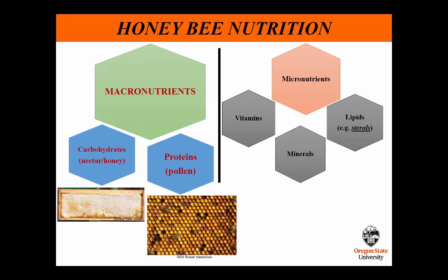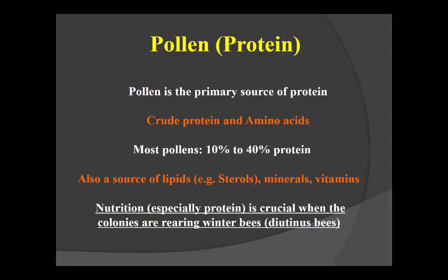Pollen is also a source of lipids, especially sterols. Lipids are broadly classified into fats, phospholipids, steroids or sterols, and waxes. Like we all need cholesterol — an important sterol for humans — all insects need sterols as well. Unfortunately, insects can't make their own sterols; they must come from the diet. Sterols are components of cell membranes and are precursors of molting hormones. All insects, including honeybees, get their sterols from diet — specifically from pollen. 24-methylene cholesterol is the specific cholesterol that bees need in high amounts, and it comes from pollen.